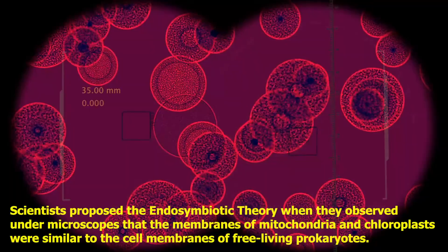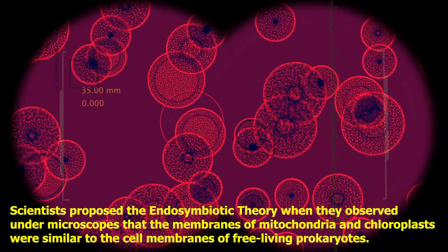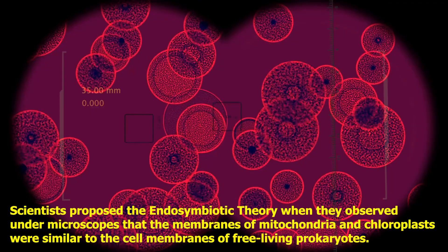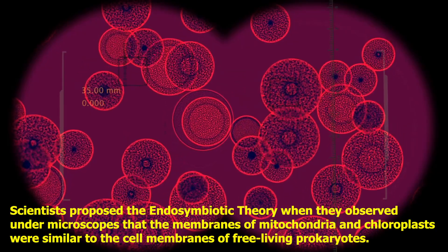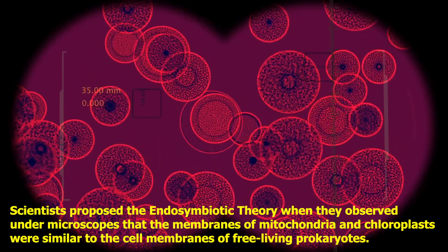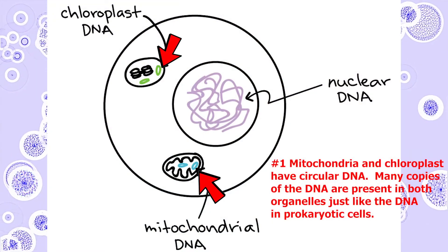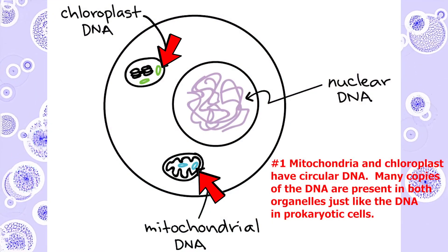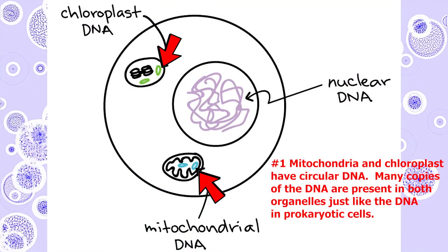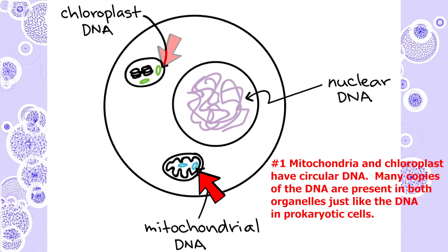Now let's look at the evidence that supports the endosymbiotic theory. Scientists proposed this idea over a century ago when they observed under a microscope that the membranes of mitochondria and chloroplasts were similar to cell membranes of free-living prokaryotes. Supporting evidence number one: both mitochondria and chloroplasts' DNA are circular, and many copies of the DNA are present in both organelles, just like the DNA in prokaryotic cells.